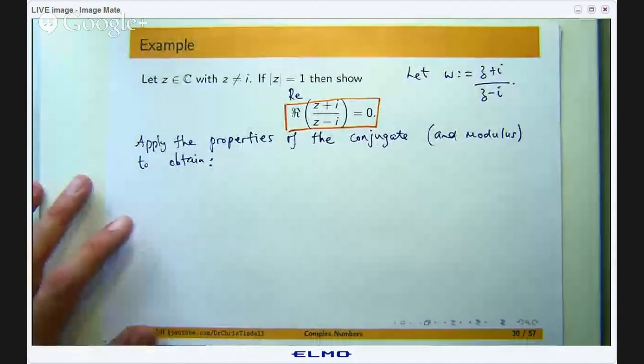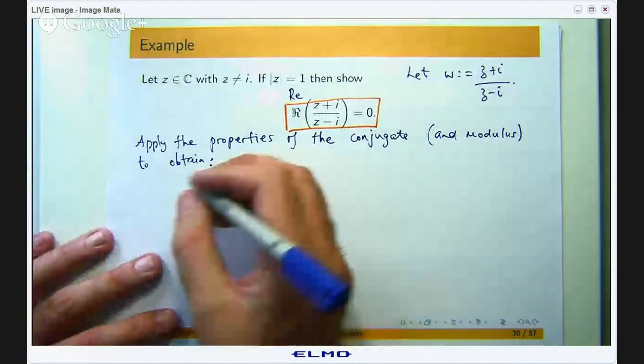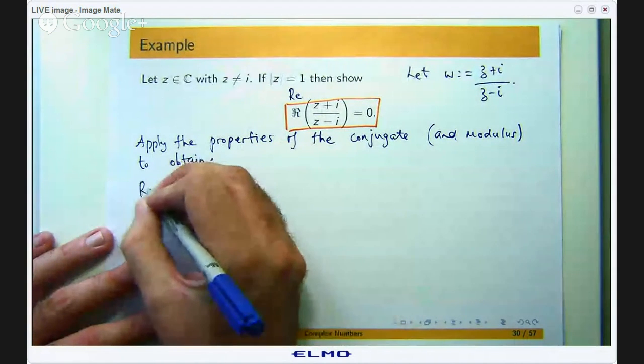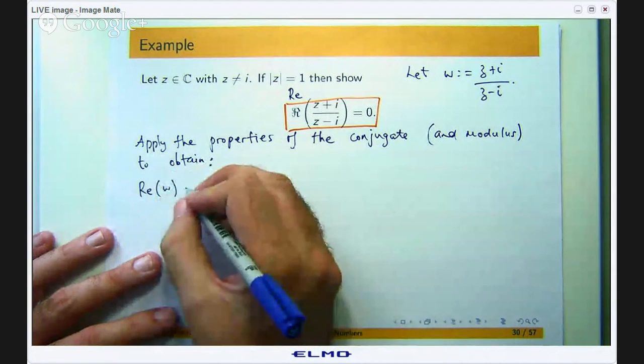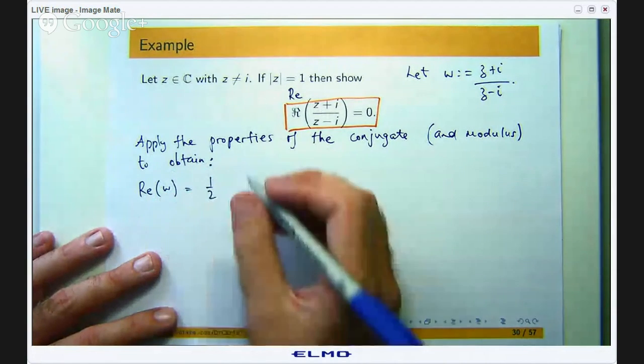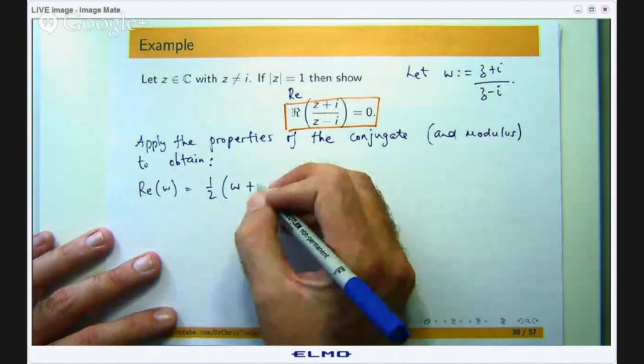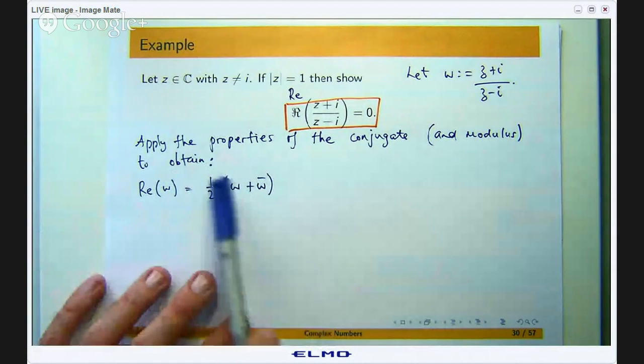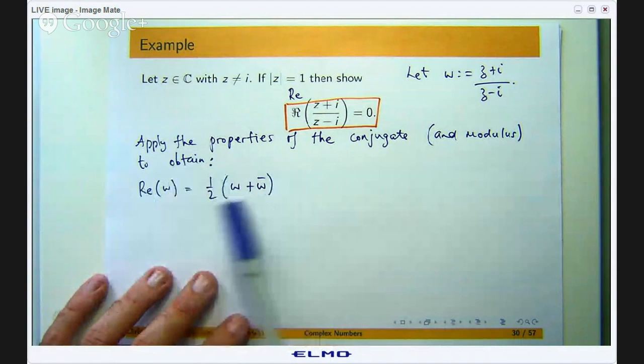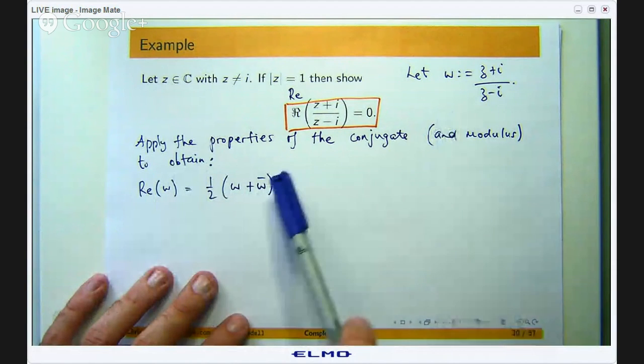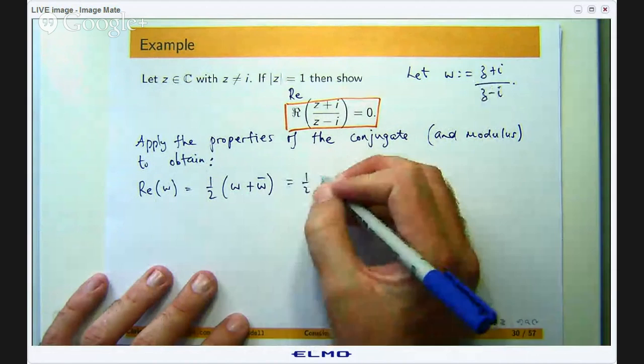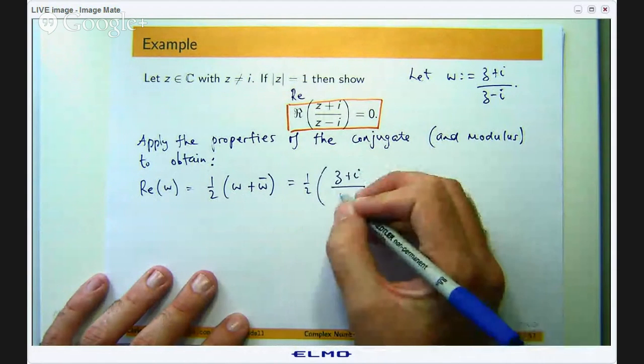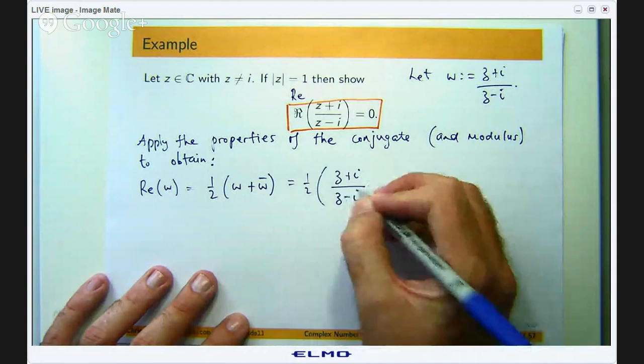Okay so the real part of w is half of w plus its conjugate. Okay so basically I want to show you that this is all zero. So if I go back to this form up here, what I am going to do is take the conjugate and see if I can simplify.